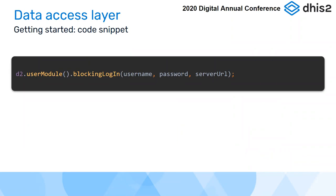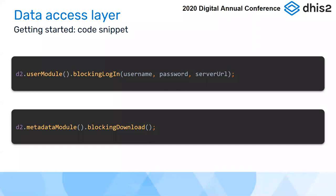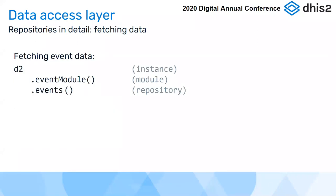Following the typical workflow after instantiation: to log in, go to the user module, find the login method, and pass the username, password, and server URL. After logging in, go to the metadata module and download it. After that, to download data, use the repositories. In this example we work with the event module and the event repository — once you have the instance, call the event module, enter the event repository, and fetch all data in the database using the get method.